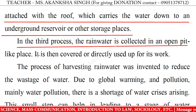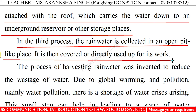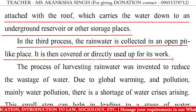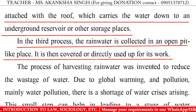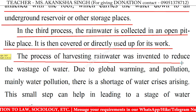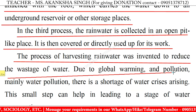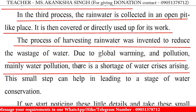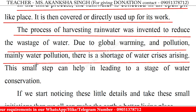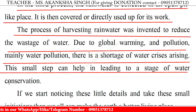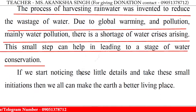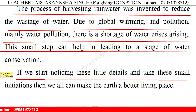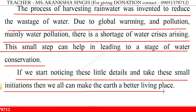In the third process, the rainwater is collected in an open pit-like place. It is then covered or directly used up for its work. The process of harvesting rainwater was invented to reduce the wastage of water. Due to global warming and pollution, mainly water pollution, there is a shortage of water crisis arising. This small step can help in leading to a stage of water conservation. If we start noticing these little details and take these small initiations, then we all can make the earth a better living space.